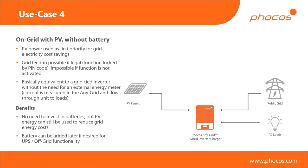Use case number four is on-grid with PV, but without a battery. We want to use PV power as well as we can to push down our energy costs from the grid.